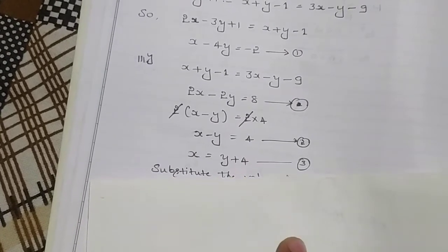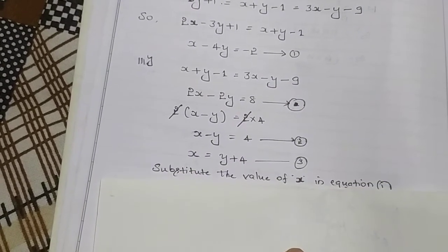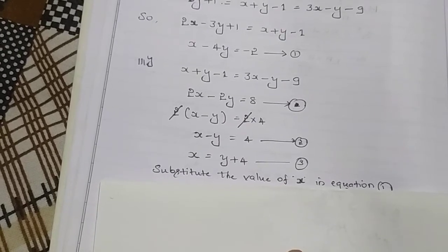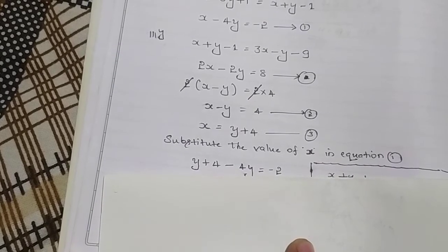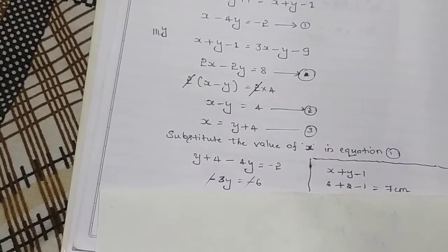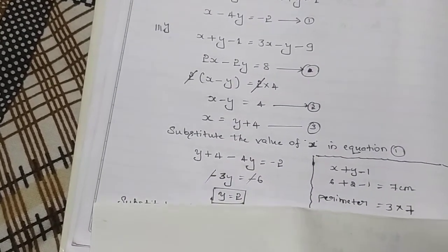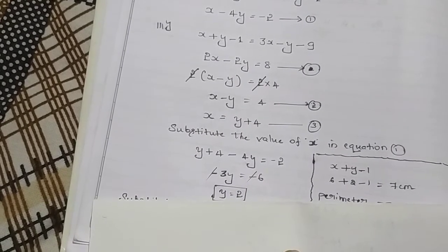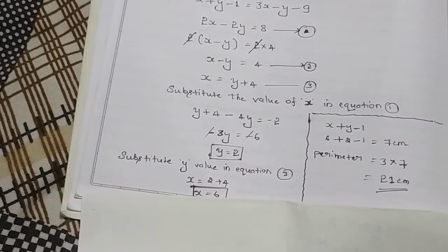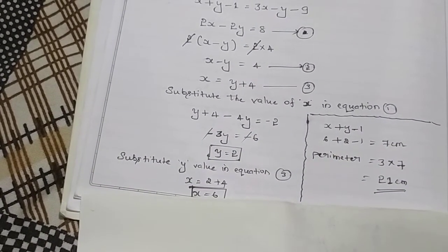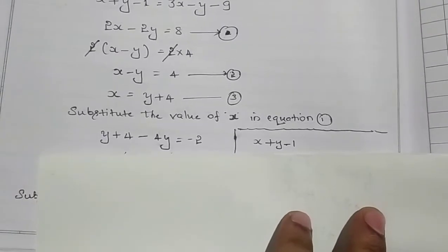From Equation 2, x minus y equals 4, so x equals y plus 4. Substituting this x value into Equation 1: y plus 4 minus 4y equals minus 2, which simplifies to minus 3y equals minus 6, giving y equals 2. Substituting y equals 2 back: x equals 2 plus 4, so x equals 6.